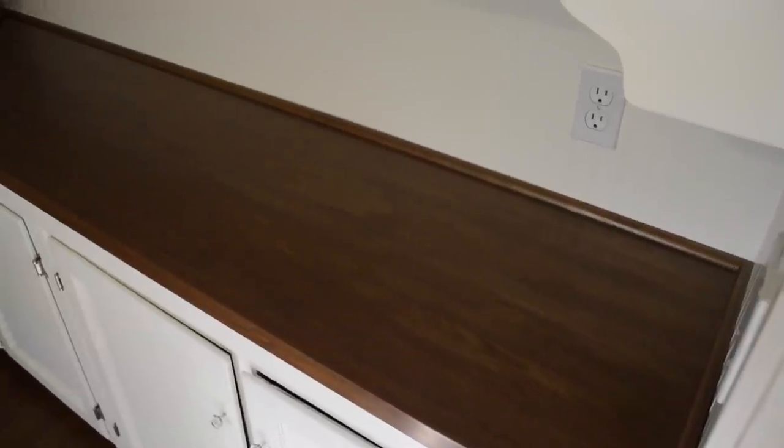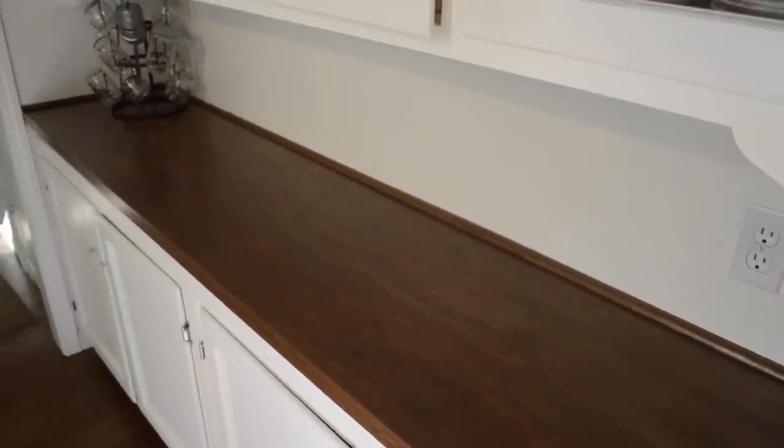Two years ago, we installed IKEA butcher block countertops in our kitchen. I always knew that I wanted wood countertops. I really like the look of them. Plus, they're easy to put in yourself and they're cost-effective. And we had had them in our other house, in our kitchen, and I knew that they worked well.